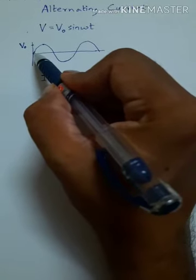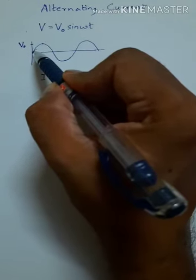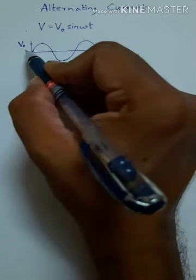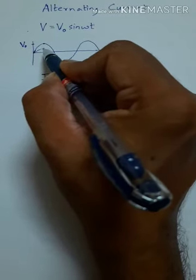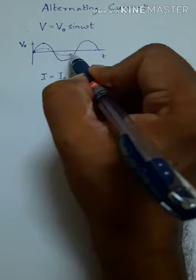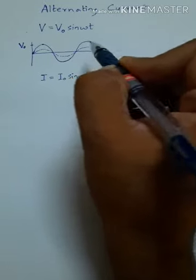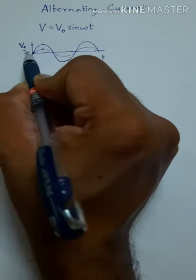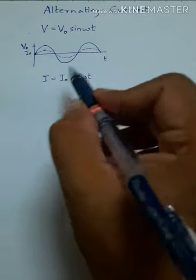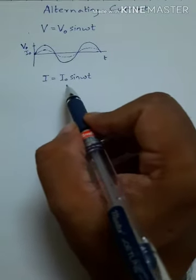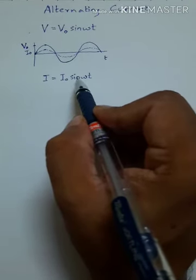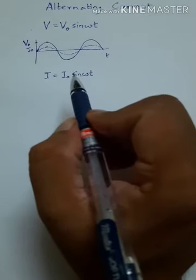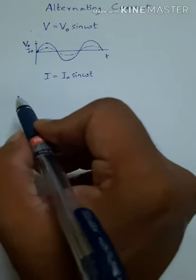If we draw a current versus time graph, similar to the voltage versus time graph, you can see the current is also sinusoidal, and the maximum value is called I₀. So voltage and current are very much similar in this way. Here, ω is the angular frequency and t is the time.